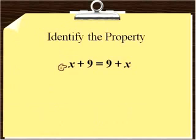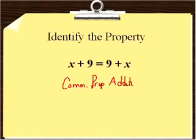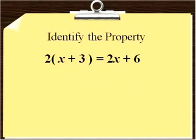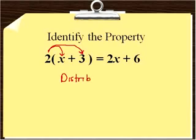Now let's identify some properties. You may want to pause on these slides and try to identify the property before clicking play for the answer. For x plus 9 equal to 9 plus x — this is an example of the commutative property of addition. All we're doing is taking two numbers and adding them together two different ways. Next, 2 times the quantity x plus 3 is the same as 2x plus 6. We distributed the 2 through the parentheses: 2 times x and 2 times 3 is 6. So this is the distributive property.